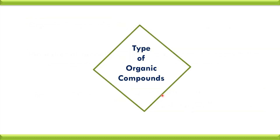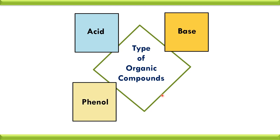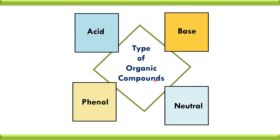Organic compounds are divided into 4 types: acid, base, phenol, and neutral. All organic compounds are divided into these 4 types — a compound may be acid, base, phenol, or neutral.